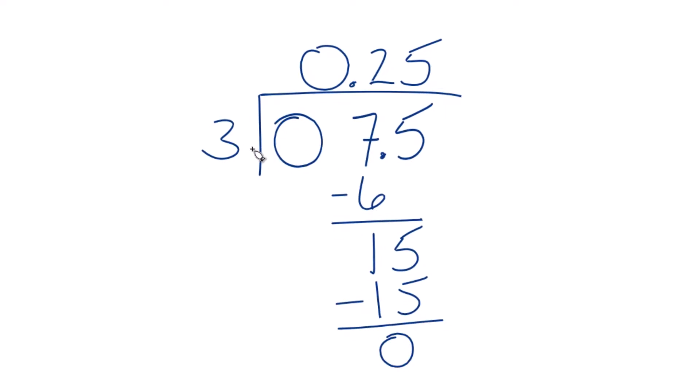So 3 goes into 0.75, 0.25 times. And we can check this because 3 times 0.25 gives you 0.75, so we know we did it right.